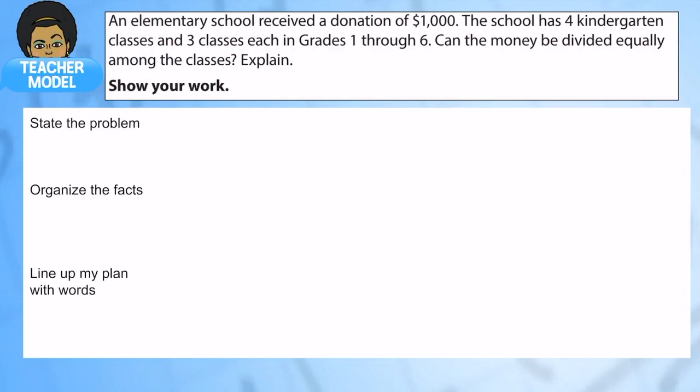This school's pretty lucky. An elementary school received $1,000 donation, which is amazing. And the school has four kindergarten classes and three classes each in first through sixth grade. So that's an important part of the three classes each. Can the money be divided equally among the classes? Explain.